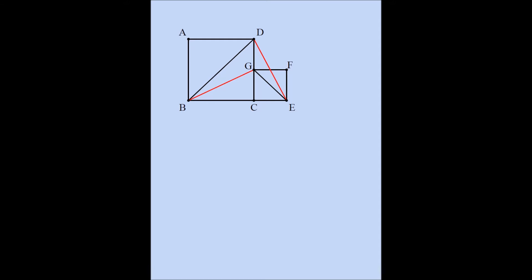Observe: triangle BCG is a right triangle and triangle DCE is also a right triangle. Moreover, triangle BCG and triangle DCE are congruent. The two legs are equal to the sides of the two squares, and angle BCG is 90 degrees and angle DCE is also 90 degrees. So we can prove by side-angle-side that triangle BCG and triangle DCE are congruent to each other.